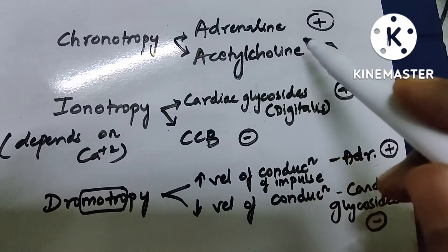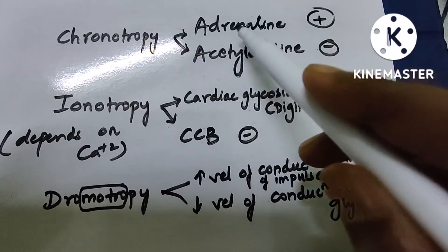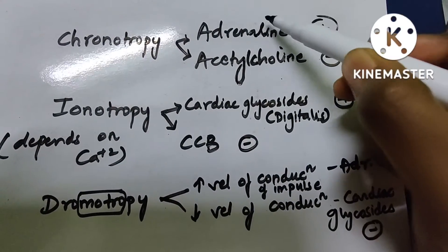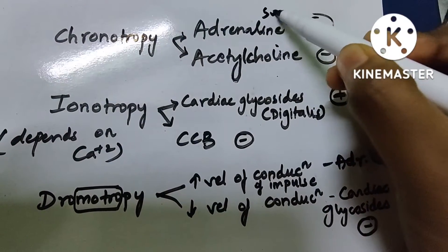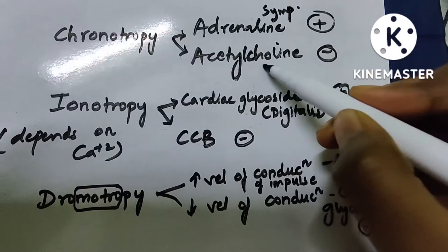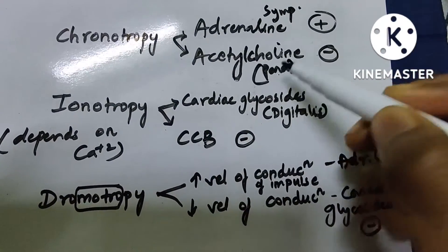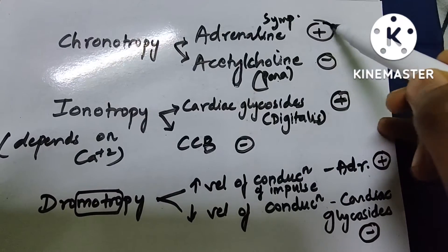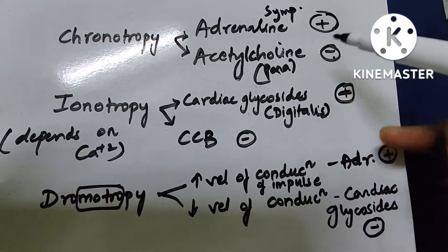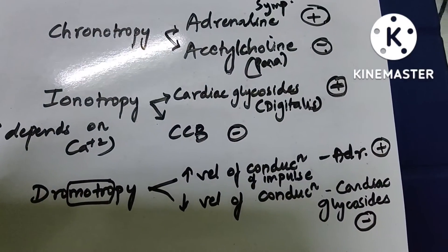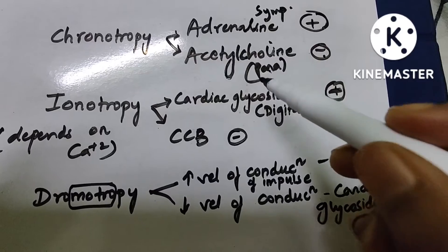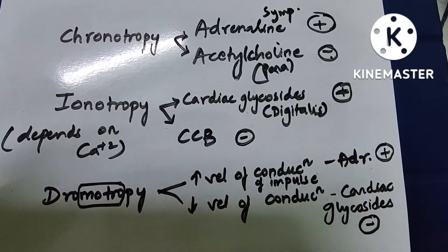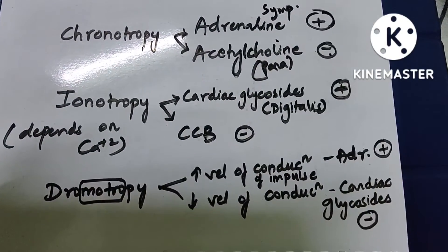Now let us discuss the individual terms and their physiological or chemical effects. Chronotropy: positive chronotropic effect is seen with adrenaline, whereas negative is by acetylcholine. Sympathetic system uses adrenaline and parasympathetic uses acetylcholine. Sympathetic increases heart rate and parasympathetic decreases it — vagus nerve also decreases heart rate. So acetylcholine decreases and adrenaline increases heart rate.